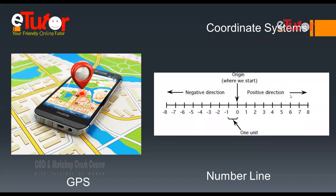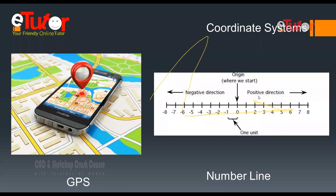This is the number line. This is the origin. This is the positive direction and this is the negative direction. This is the coordinate system.